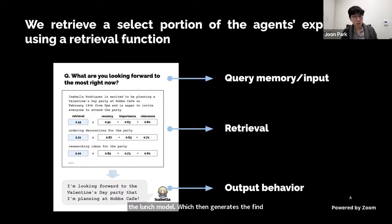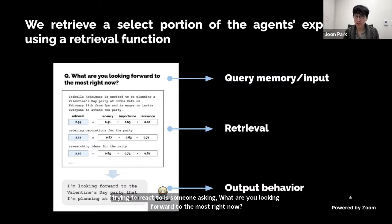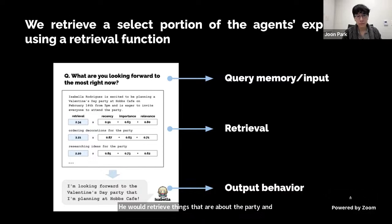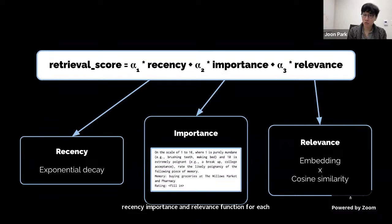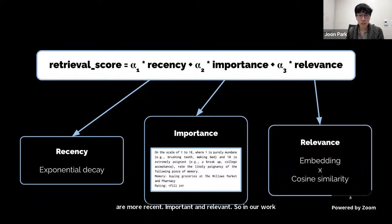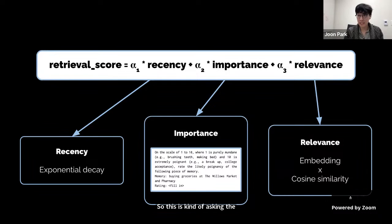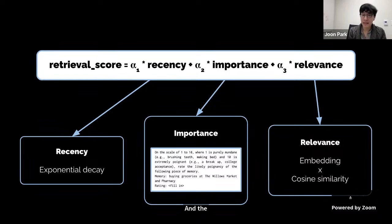Our architecture implements a retrieval function that takes the agent's current situation as input and returns a subset of the memory stream to pass to the language model, which then generates the agent's output behavior. For example, if someone asks Isabella what she's looking forward to most right now, she retrieves memories about the party and responds: 'I'm looking forward to the Valentine's Day party.' The retrieval function combines recency, importance, and relevance. Recency uses an exponential decay function; importance prompts the language model for event saliency, defining the agent's core memories; and relevance is a cosine similarity measure of embeddings.